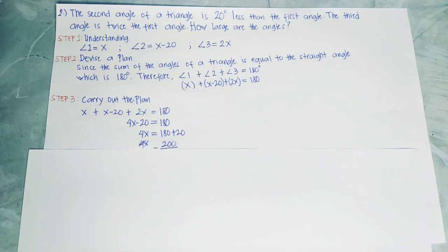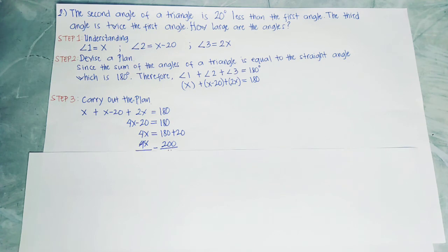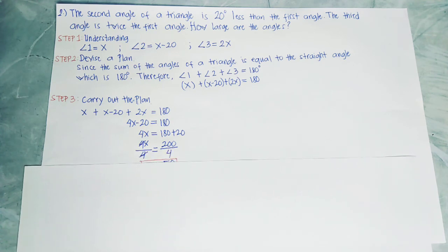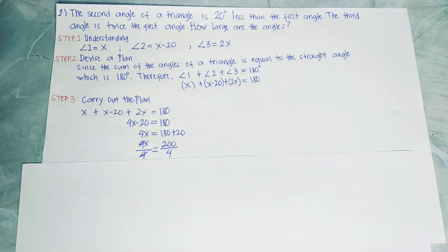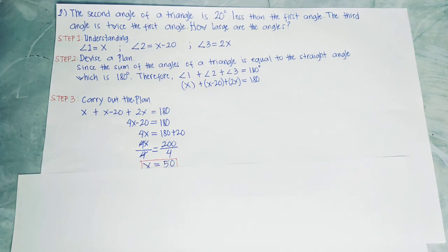Divide both sides by 4. 4x divided by 4 — cancel the 4 — and 200 divided by 4 is 50. So the value of x equals 50.